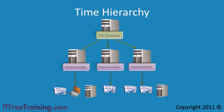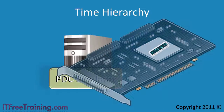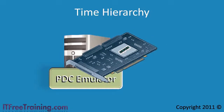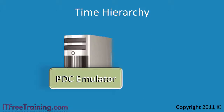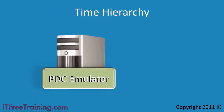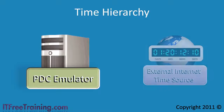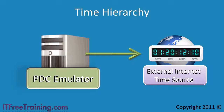If your company has the money, they may consider installing a hardware clock in the PDC emulator. These clocks are more accurate than the clock found in the computer. In most cases a company will choose to sync the PDC emulator's internal clock from an external time source. This is generally the preferred method because it will keep your clocks accurate and costs nothing in additional hardware. If your network does not have internet access — for example it is a secure network — you may have no choice but to install a hardware clock in your PDC emulator to ensure the time stays accurate.